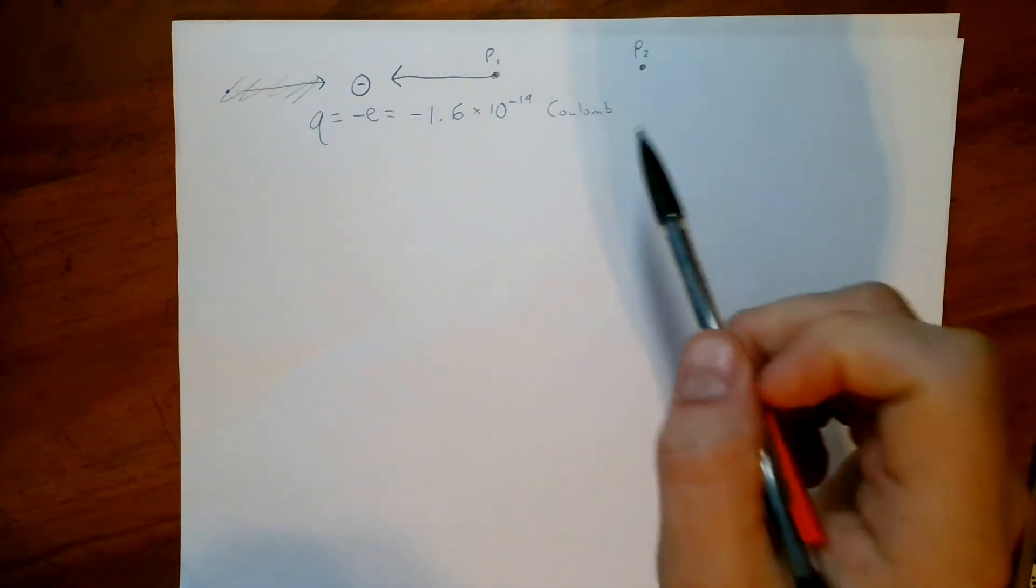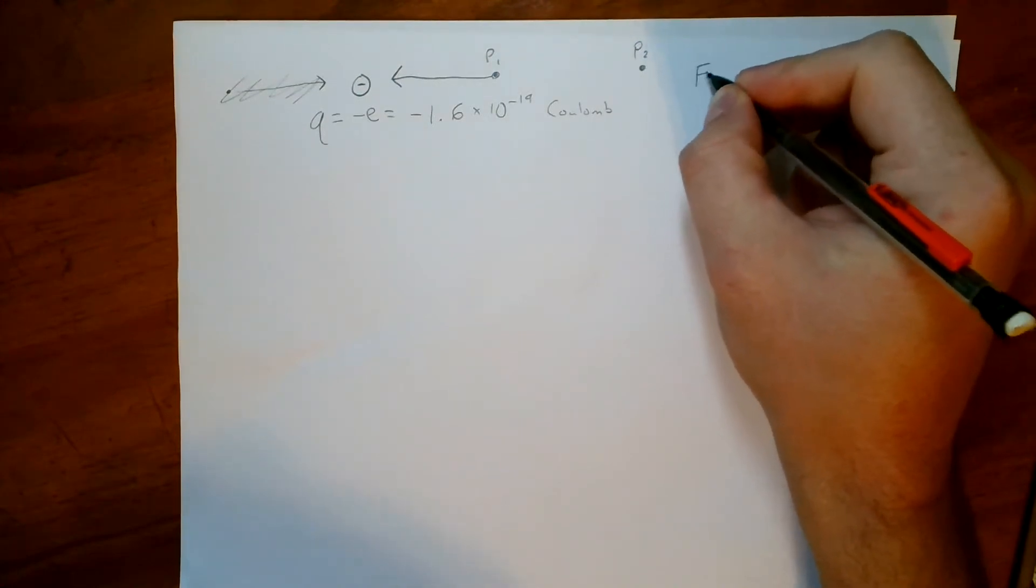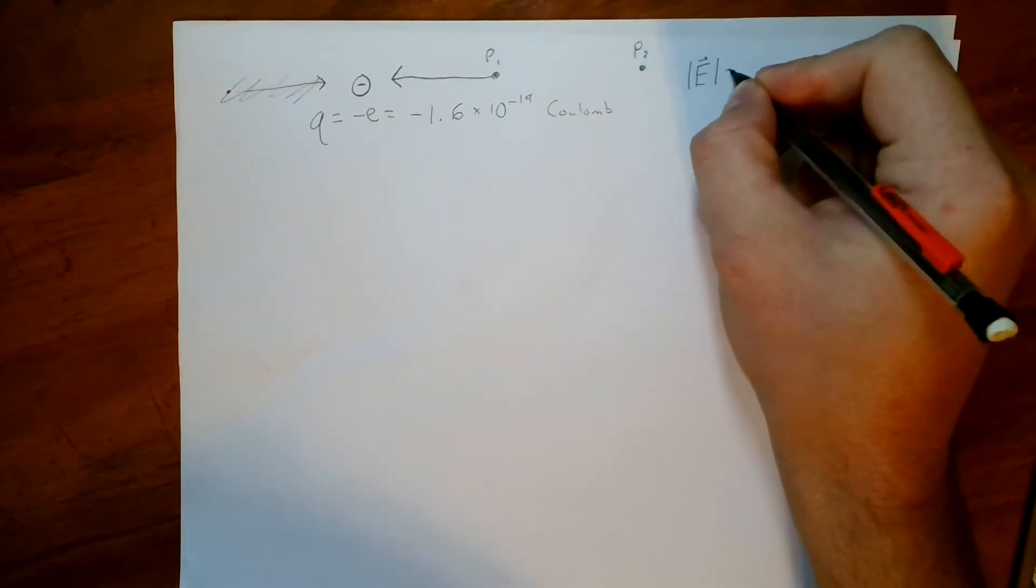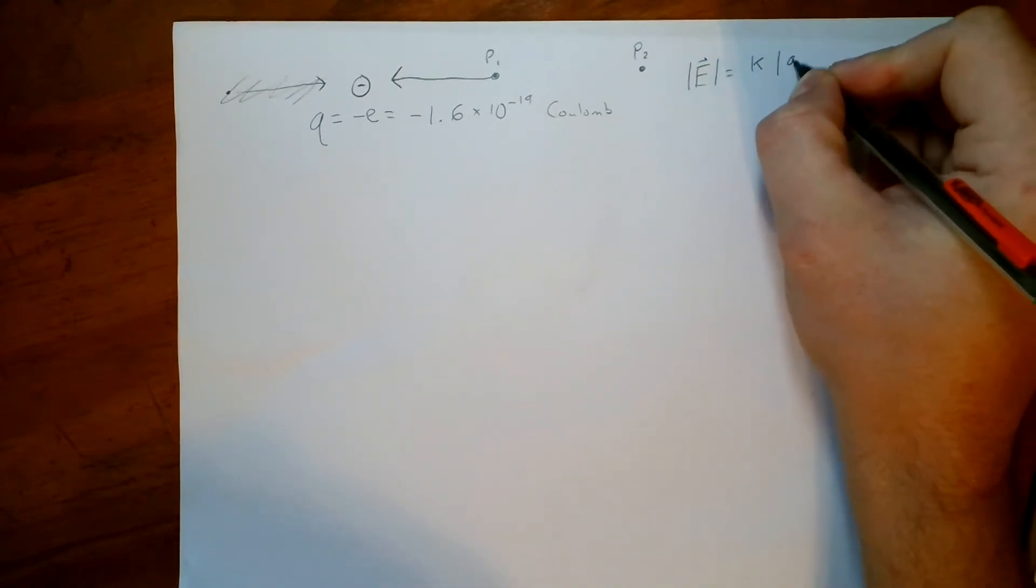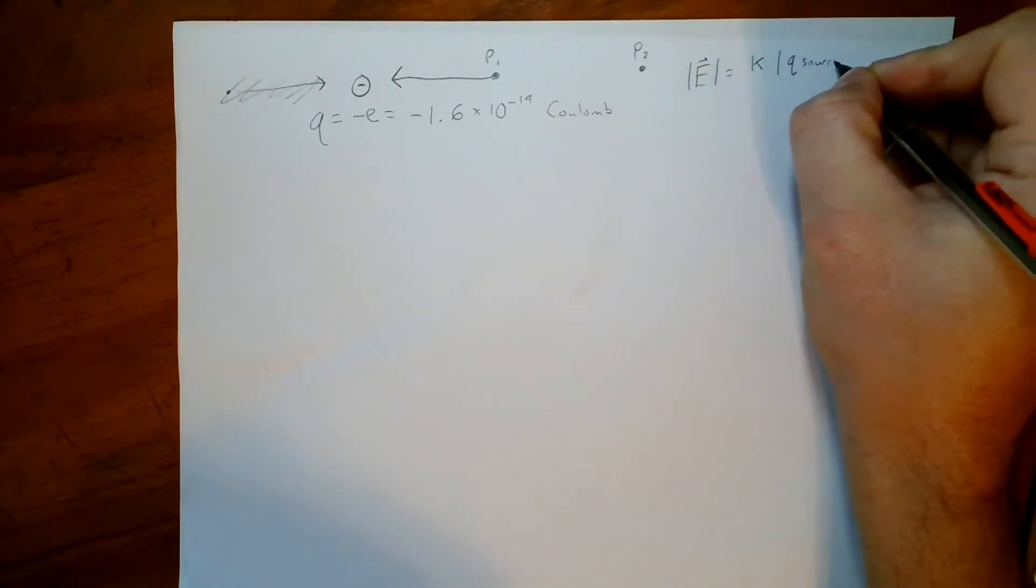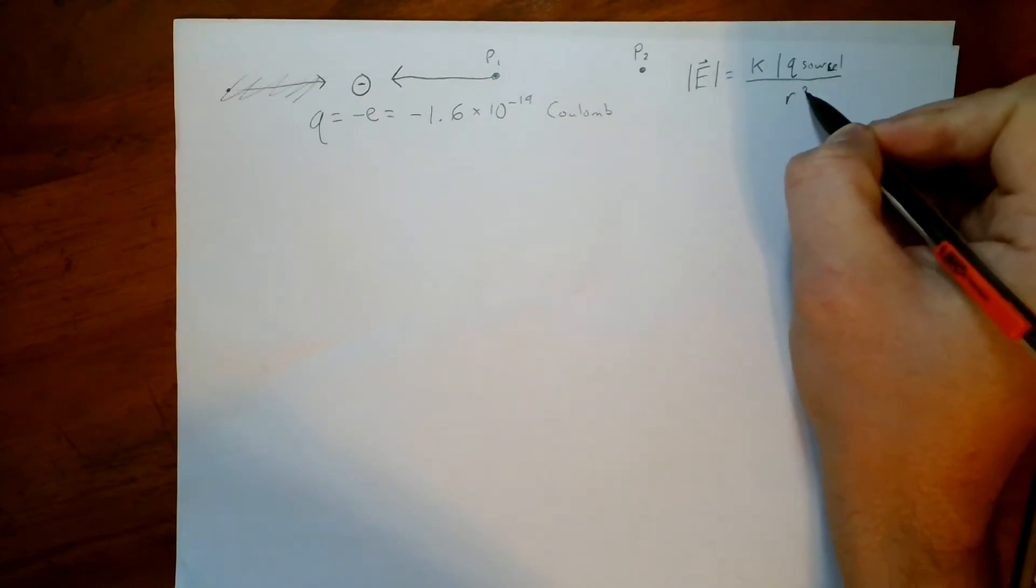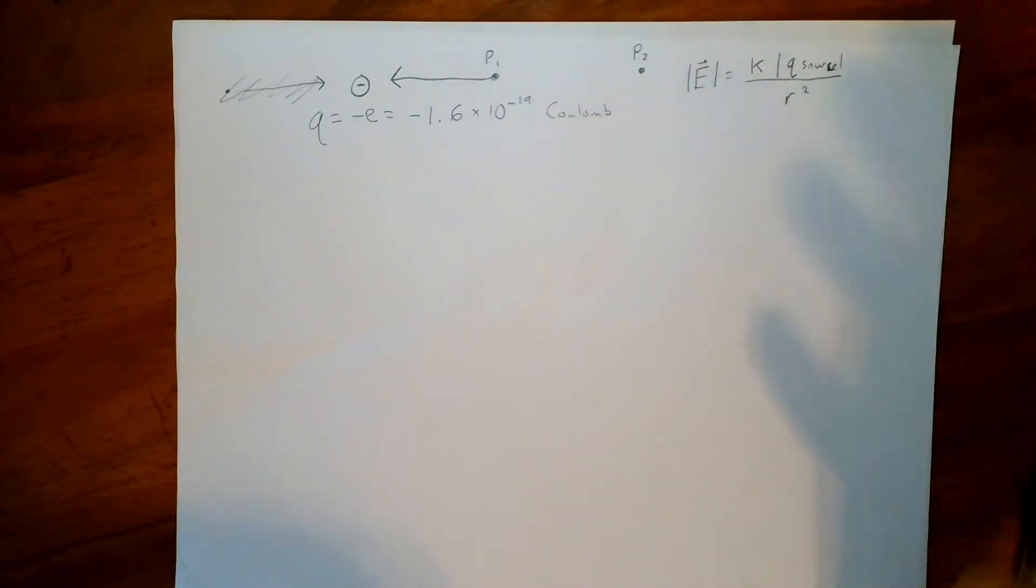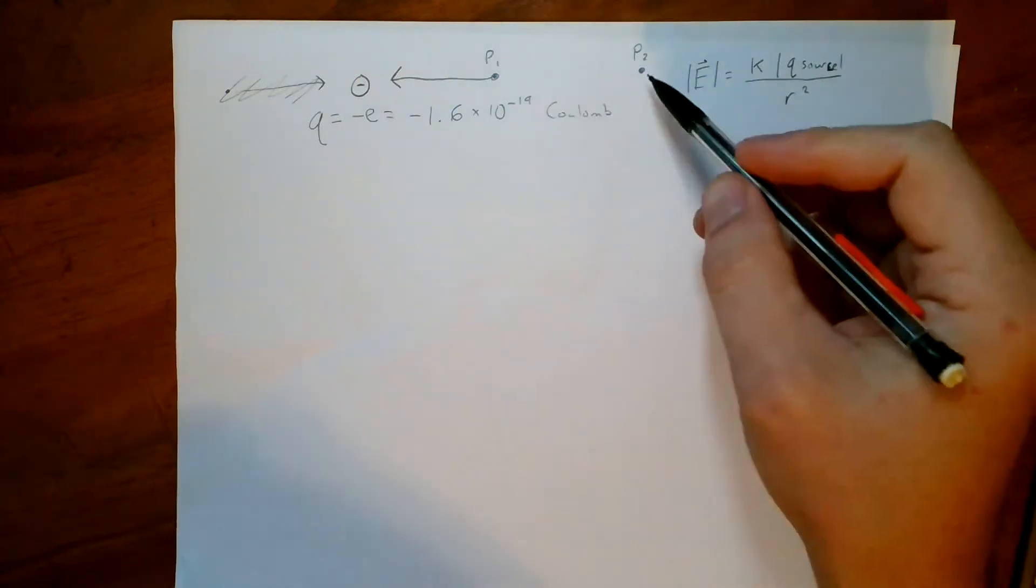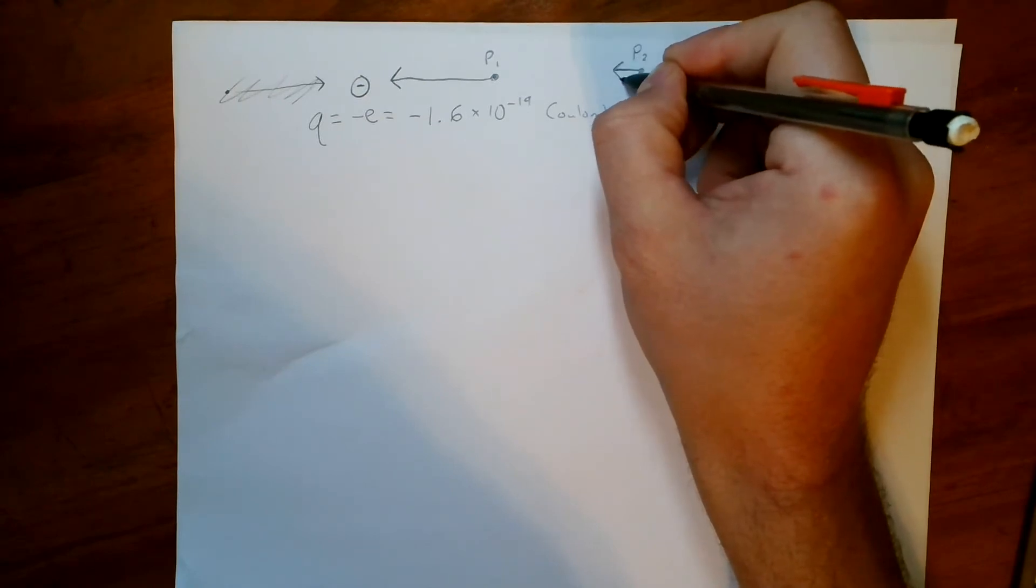And point P2 is twice as far away. Well, we know that the electric field strength, E, which is a vector, is equal to k times the absolute value of q source divided by r squared. So if we're twice as far away, the field vector needs to be four times weaker. The electric field strength here needs to be four times weaker than at P1. And it's still going to point to the left, I'm just going to try to draw it four times smaller.